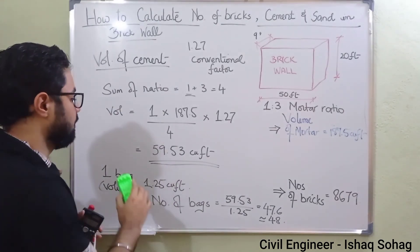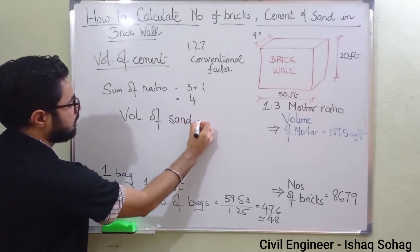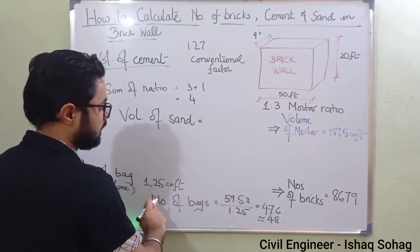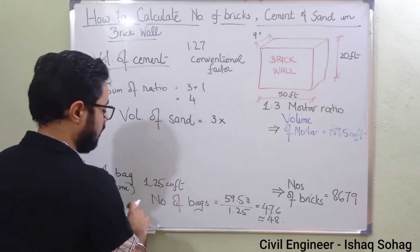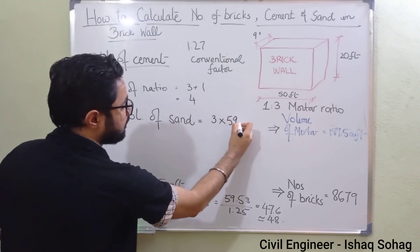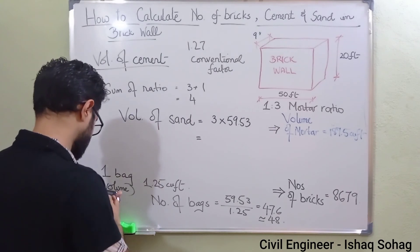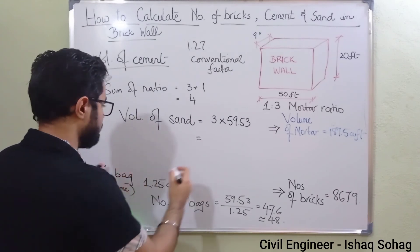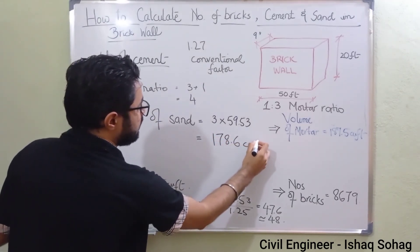The final calculation is the volume of sand. We already know we are using a ratio of 1:3, so we multiply 3 times the volume of cement: 3 × 59.53 = 178.6 cubic feet. That is the volume of sand required for this brickwork.